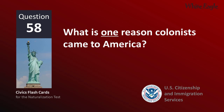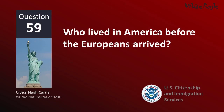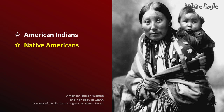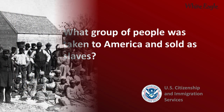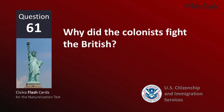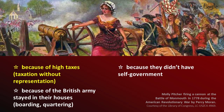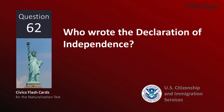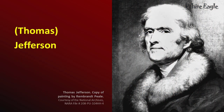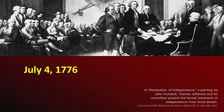What is one reason colonists came to America? Freedom. Who lived in America before the Europeans arrived? Native Americans. What group of people was taken to America and sold as slaves? Africans. Why did the colonists fight the British? Because of high taxes — taxation without representation. Who wrote the Declaration of Independence? Thomas Jefferson. When was the Declaration of Independence adopted? July 4th, 1776.